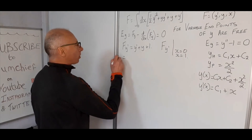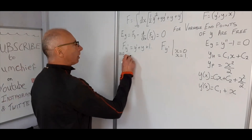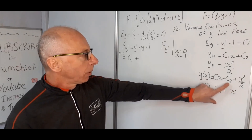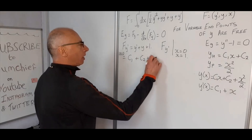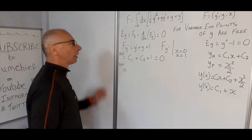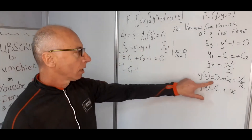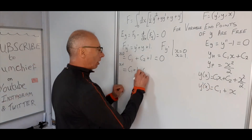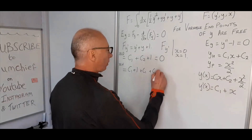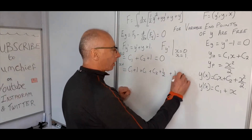At x = 0: y prime = c1, and y = c2, so we get c1 + c2 + 1 = 0. At x = 1: y prime = c1 + 1, and y = c1 + c2 + 1/2, so we get (c1 + 1) + (c1 + c2 + 1/2) + 1 = 0, which simplifies to 2c1 + c2 + 5/2 = 0.